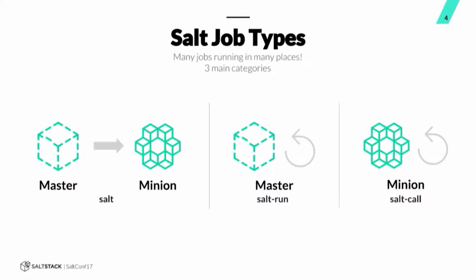We have a couple different types of jobs. Many jobs running in many places, but they generally fall into three main categories. We have remote execution, which is what we'll be focusing on today — masters talking to minions and minions doing the work; that's the salt command. Then we also have local jobs that run directly on the master — an example of that would be the runners, the salt-run command. And then we also have jobs that run directly on the minion with the salt-call command.